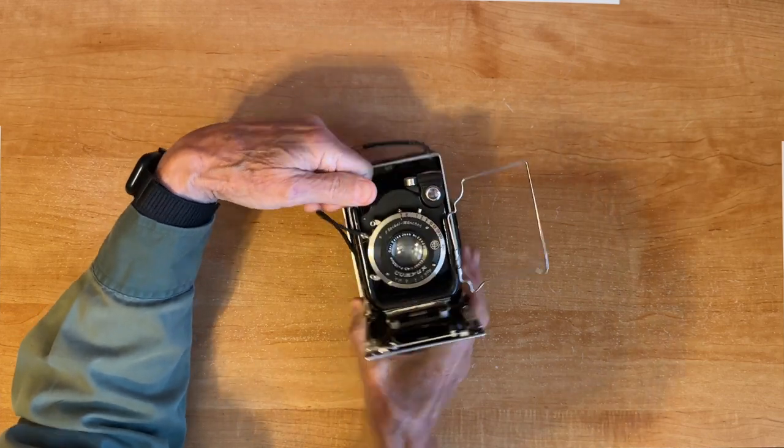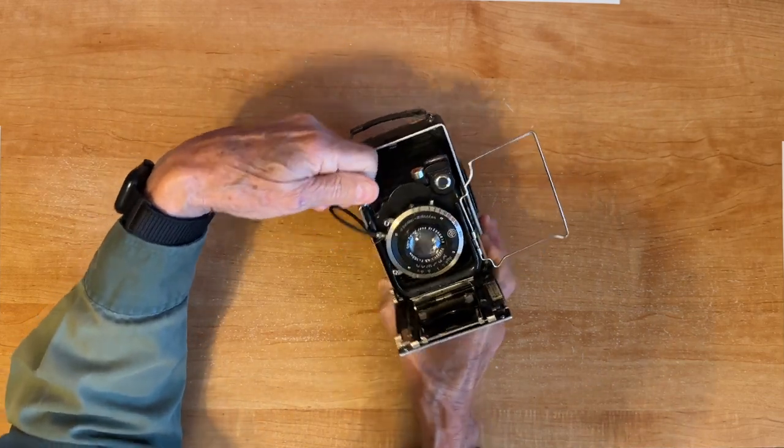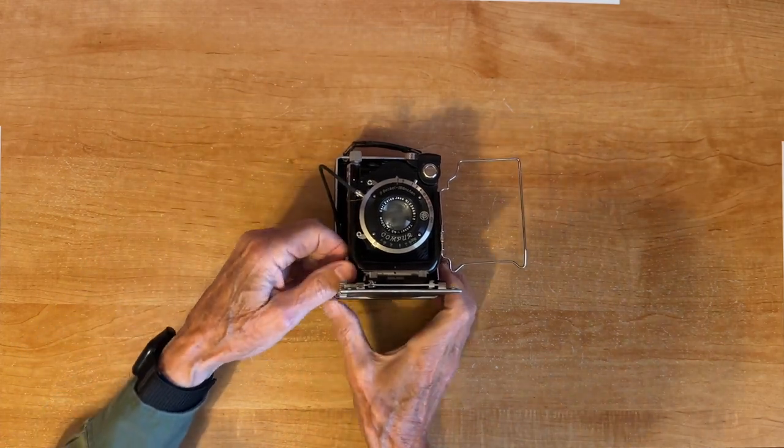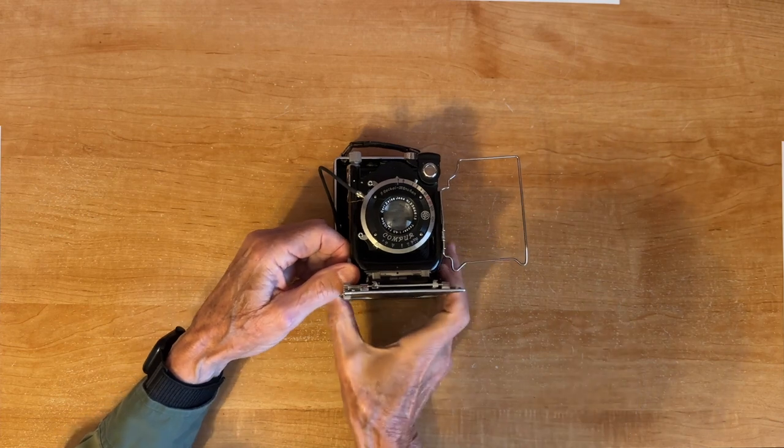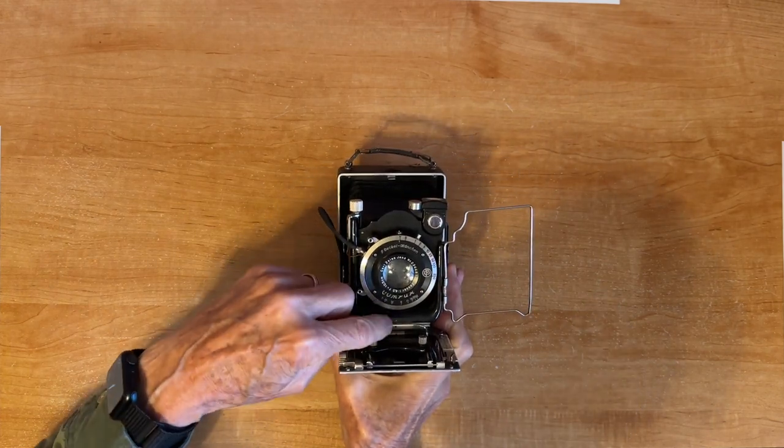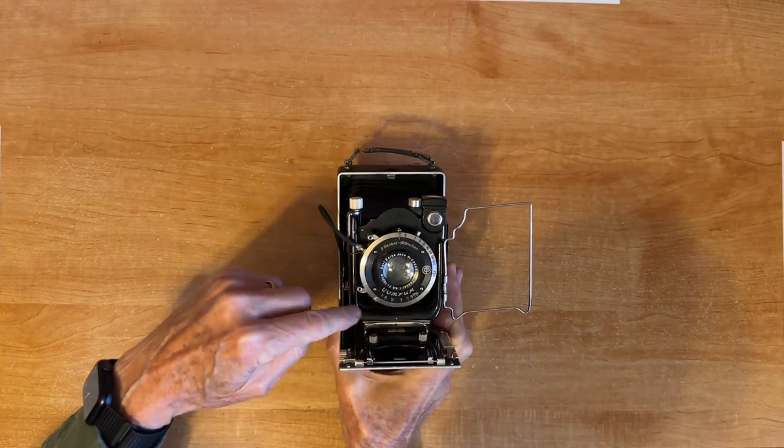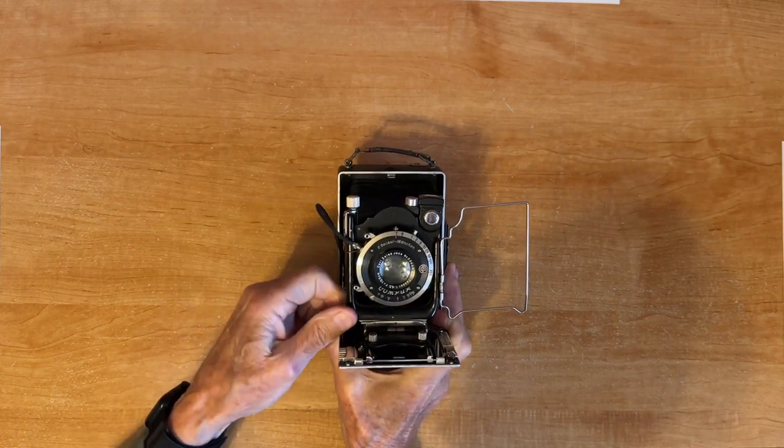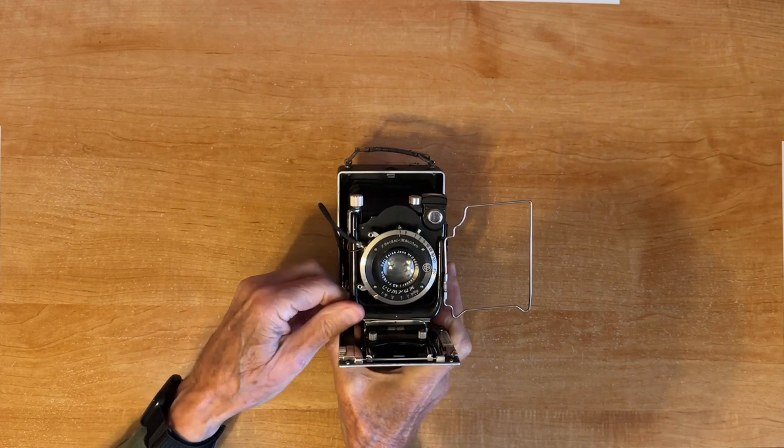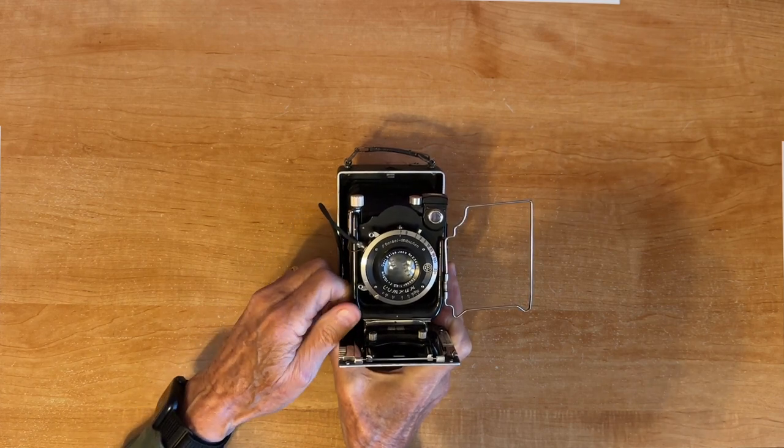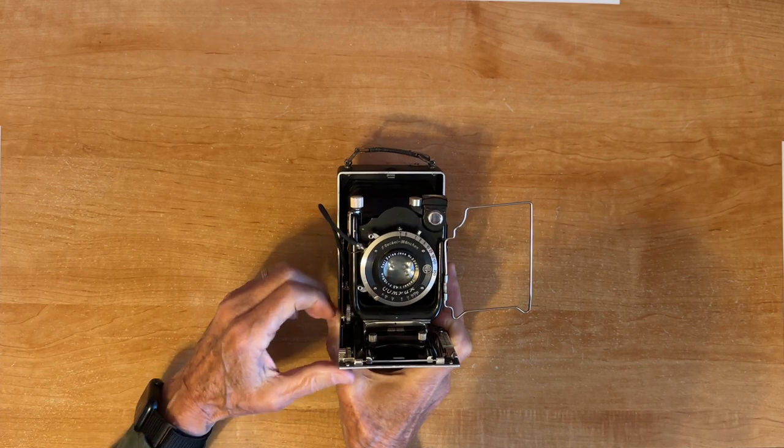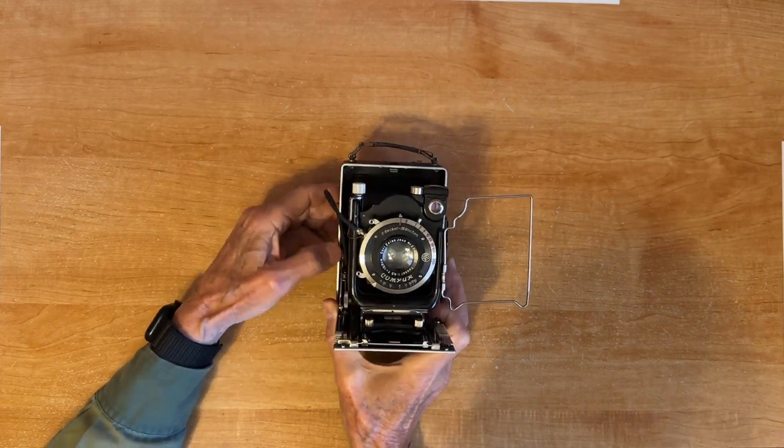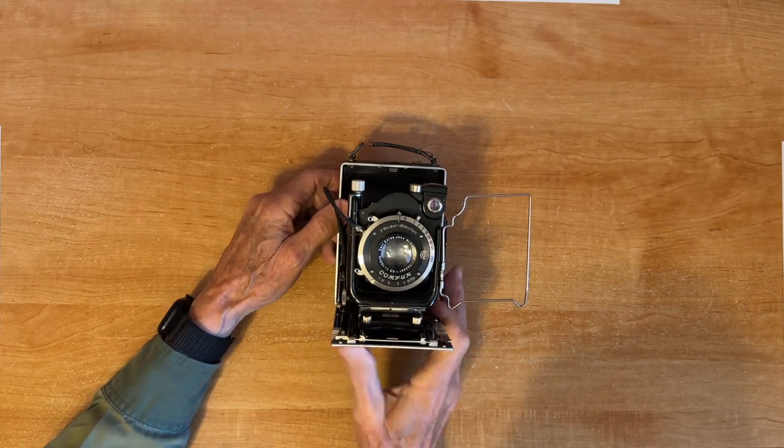Over here on this side is another knob to traverse the lens left and right and there's a little white dot on the black enamel and there's a black dot on the chrome to align that when you're done. And that's for taking landscapes of buildings where you want to do the different parallax corrections so that things look parallel like a typical view camera.